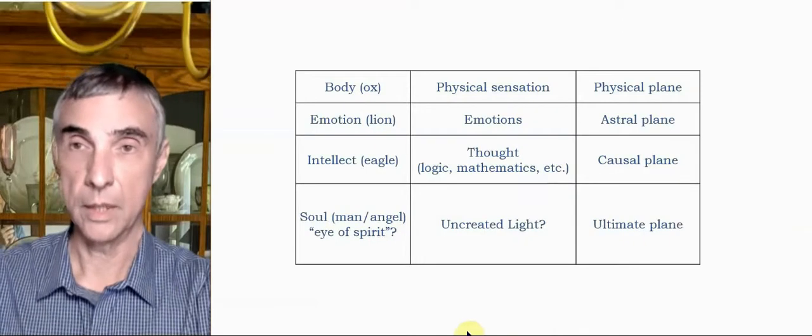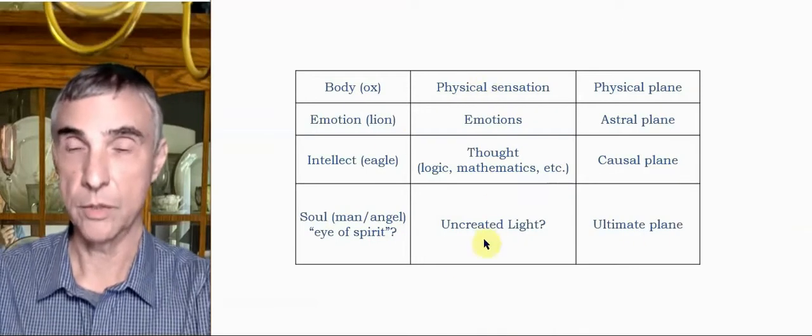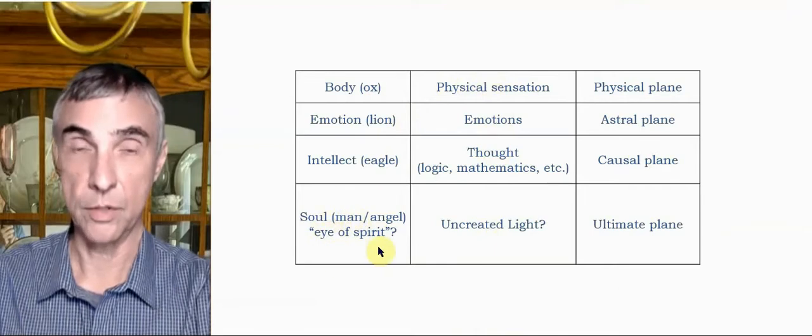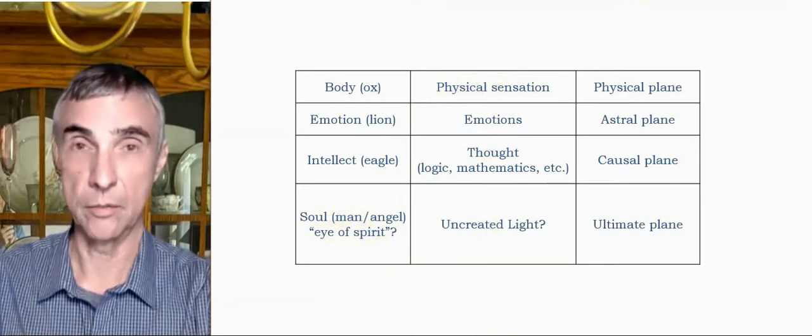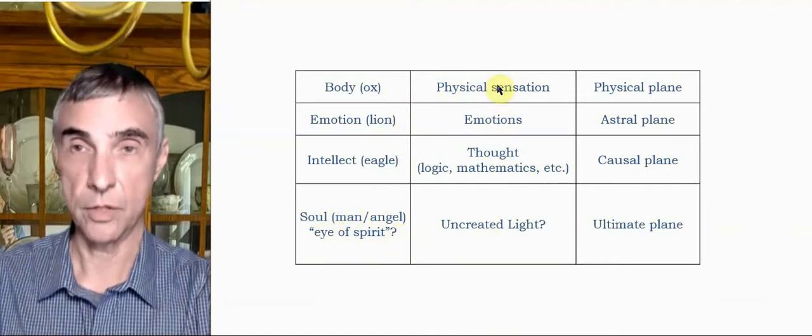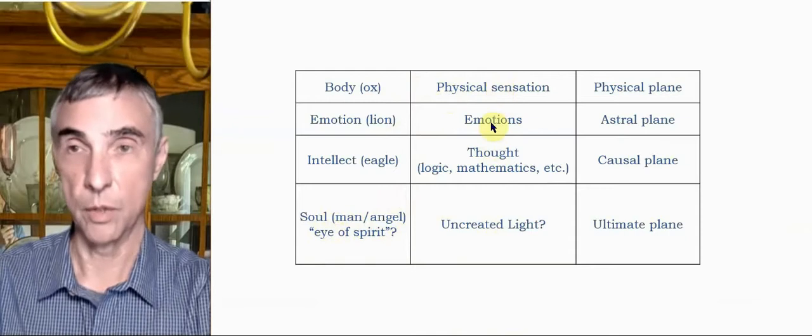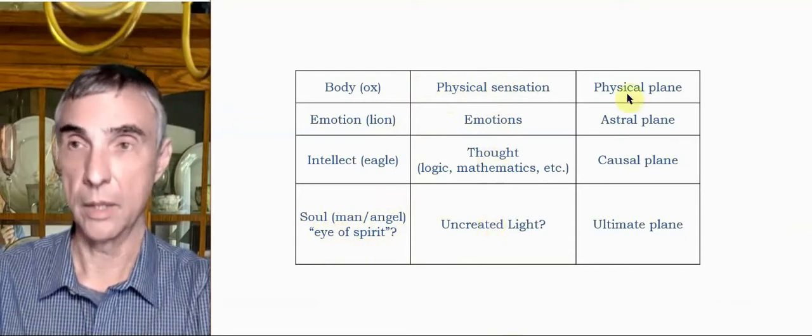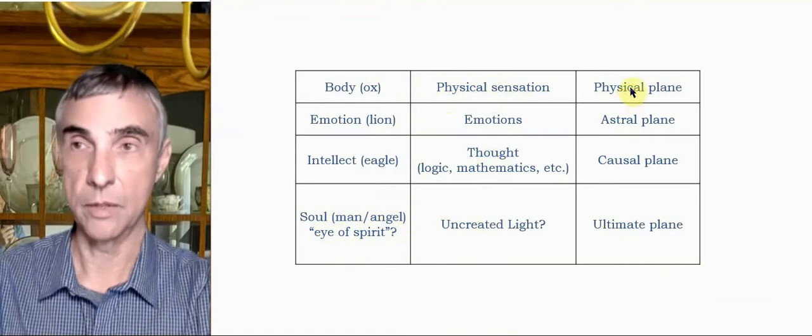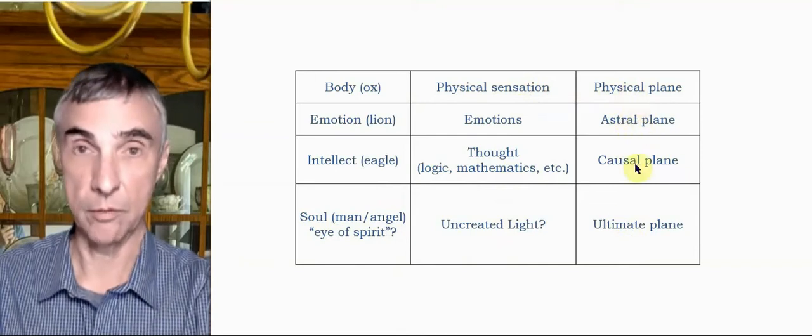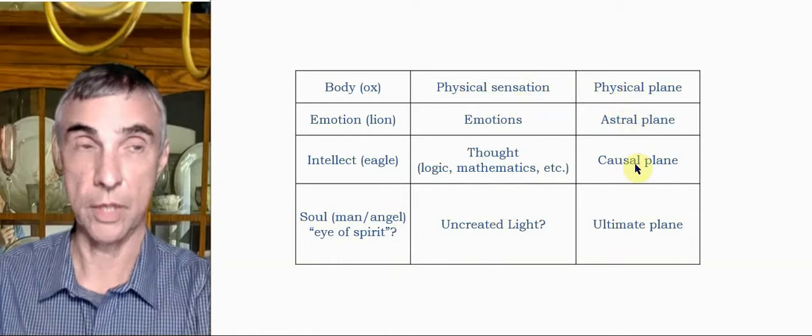We could say then that there are different planes of experience. At one point I called this consciousness and I'm calling it the eye of the spirit. That's something that has to be reconciled in a future video. But given these parts of a human being, we have physical sensation that the body experiences, emotions, thought, and uncreated light with the eye of the spirit. These levels have been given names: physical plane, astral plane, causal plane, and the ultimate plane. Of course, people can define astral plane and causal plane however they want, so this isn't perfectly standard terminology.